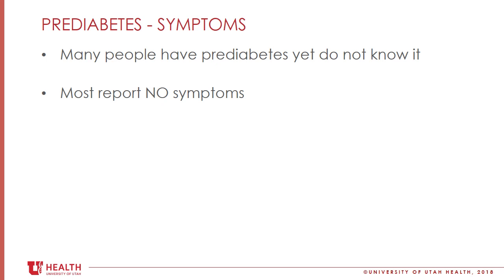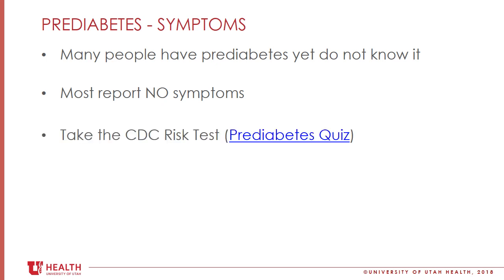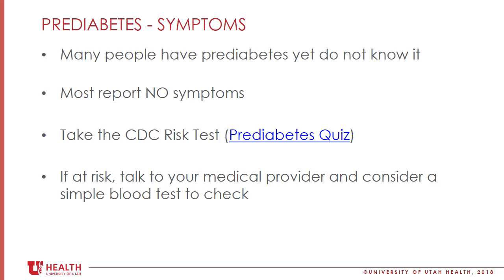The CDC estimates that 84 million people have prediabetes, and yet almost 90 percent of those people do not know it. This is because most people report no symptoms with prediabetes. The American Diabetes Association recommends that people who are overweight or obese and have one of the listed risk factors should be tested for prediabetes or diabetes. You can also take the CDC risk test by clicking the prediabetes quiz link. If you are at risk, please talk to your medical provider and consider a simple blood test to check your status.